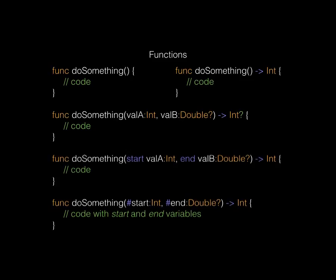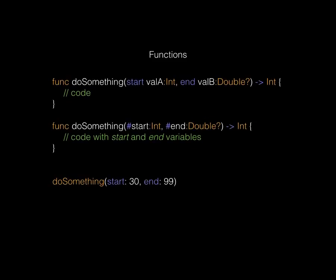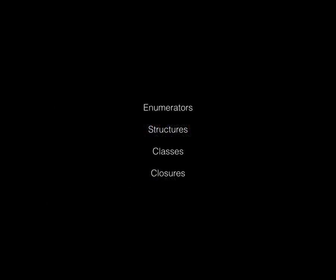When you call a function with named labels, you can see that `start` and `end` appear as identifiers followed by their values. In the first example, 30 would be inside `valA` and 99 inside `valB`; in the second, they'd be in `start` and `end`. If you didn't put identifiers in, your call would look simpler, and the variable names appear in code completion bubbles while typing.